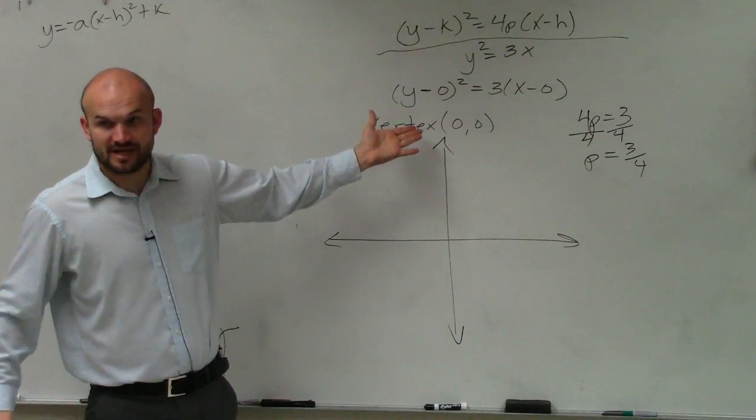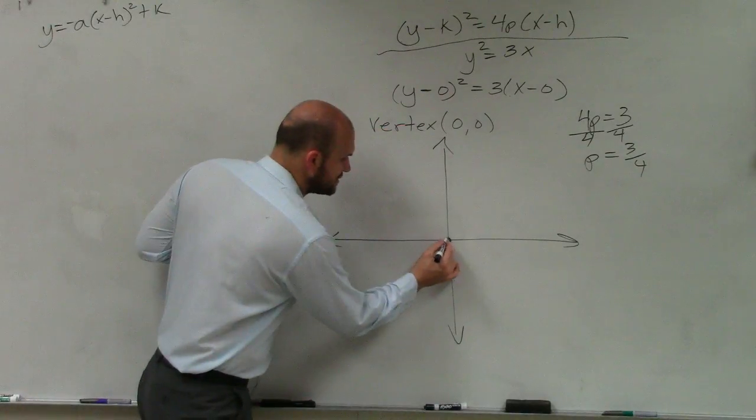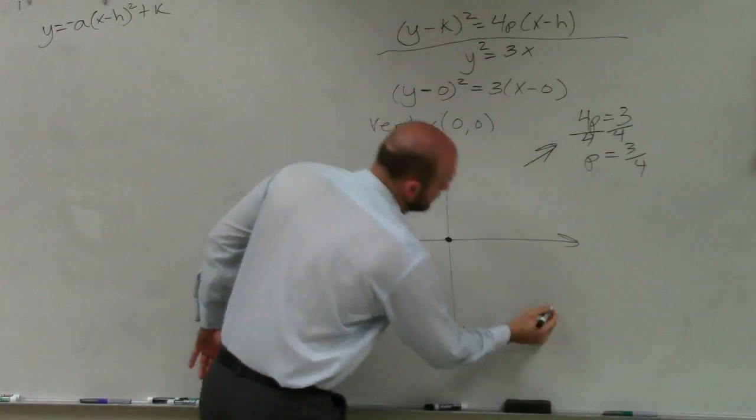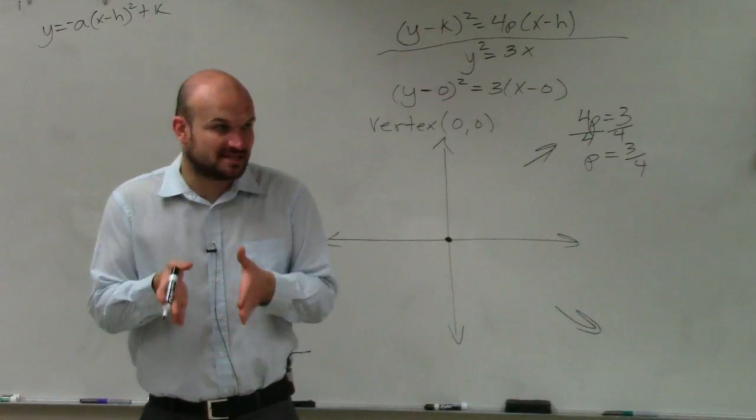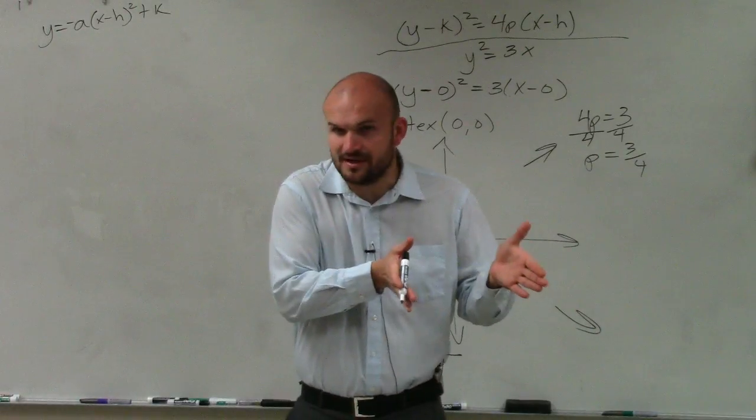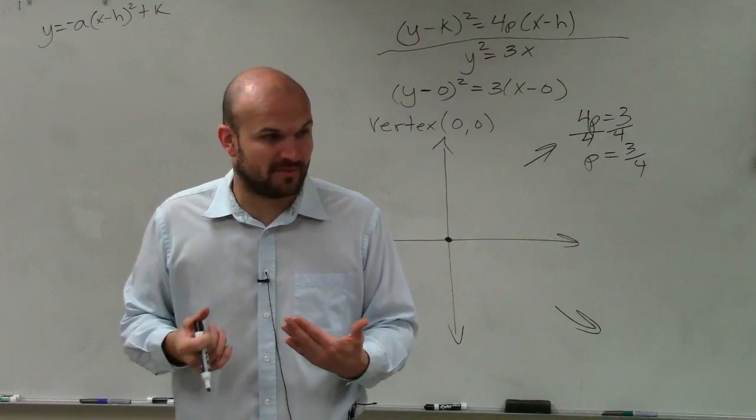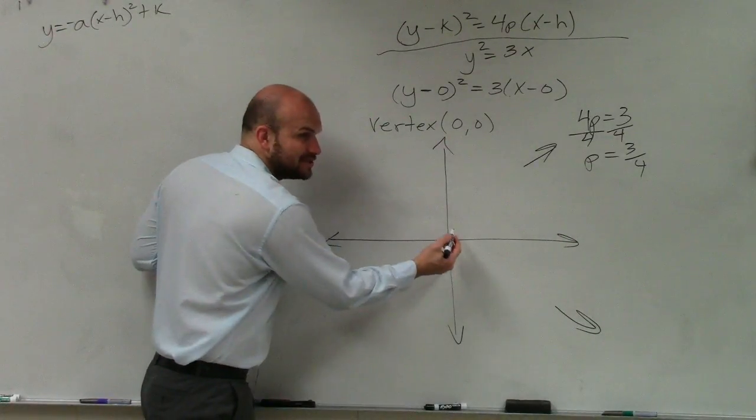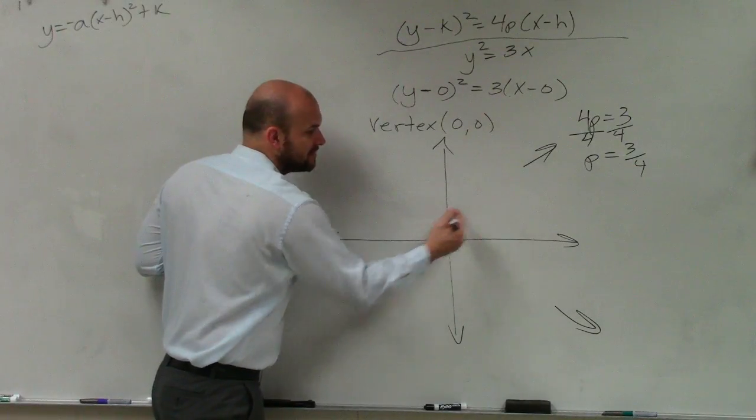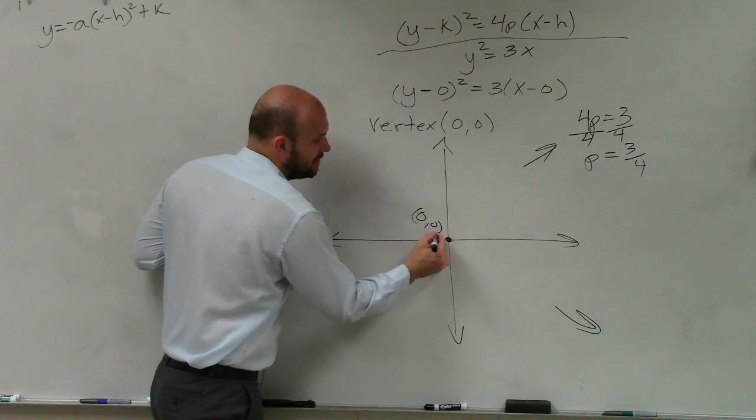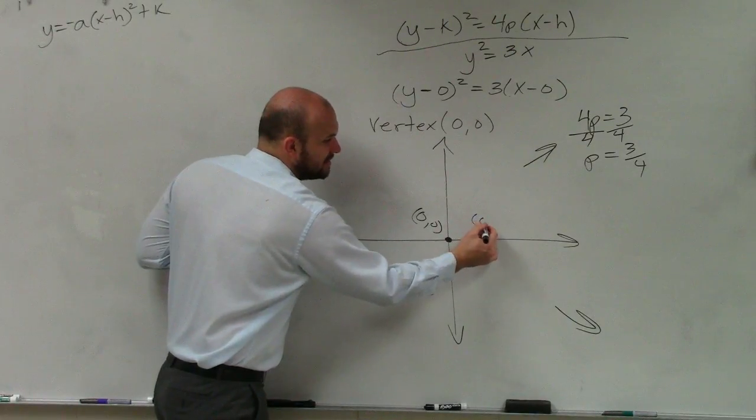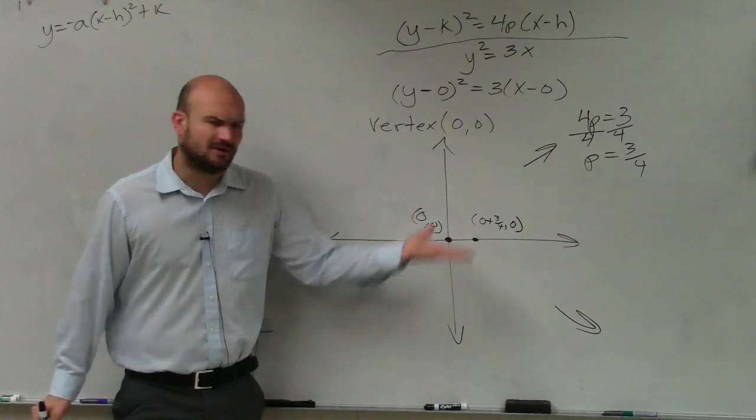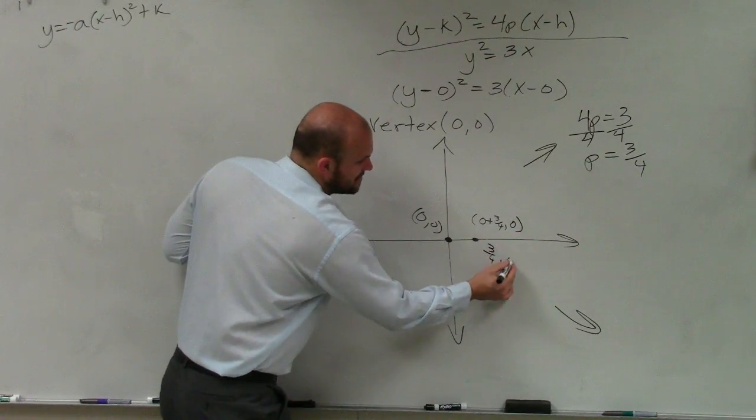So now, all I simply do is I know my vertex. That's easy, right? That's 0, 0. Now remember, p, since we're opening to the right, right? Remember, p tells us the distance from our vertex to our focus. So I'm going to be adding it to the x or the y coordinate of my vertex. Wait, x. X. Yeah, there you go. So if this is h and k, all I'm going to do is add it to, so this is at 0, 0. So now, my focus is going to be at 0 plus 3 fourths comma 0. Right? Well, and obviously, that's just 3 fourths comma 0.